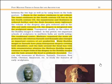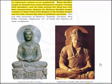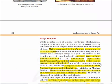One can visit museums at Mathura, Sarnath, Varanasi, New Delhi, Chennai, Amravati, etc. to study the features of early sculpture. Here you will see the image of a meditating Buddha from Gandhara, made in the 3rd to 4th century CE, and this is the Bodhisattva from Gandhara, 5th and 6th century CE.